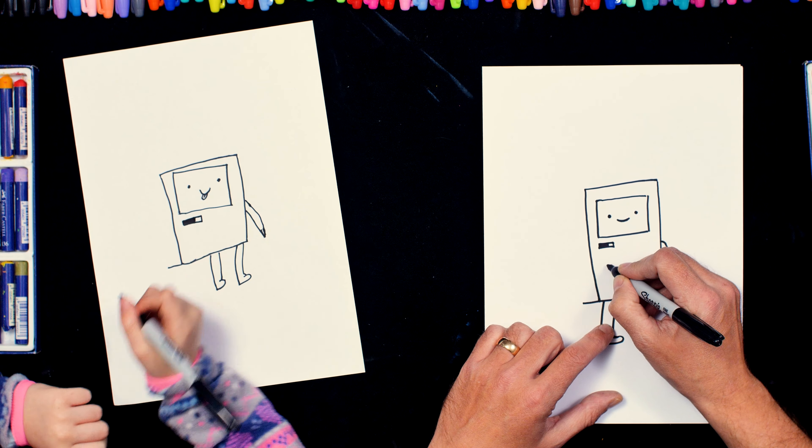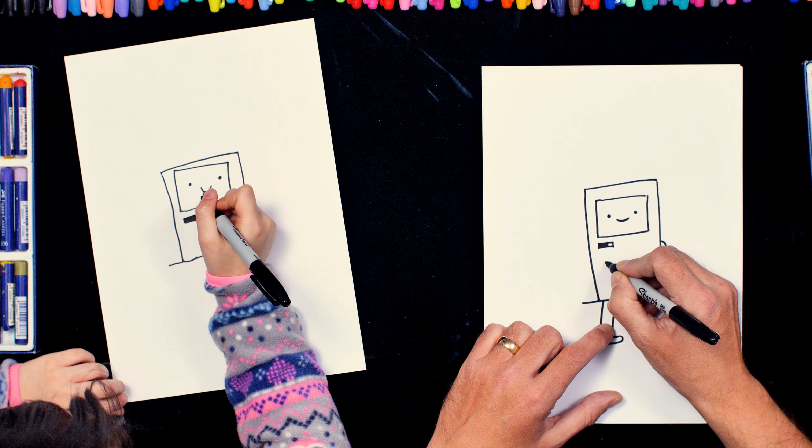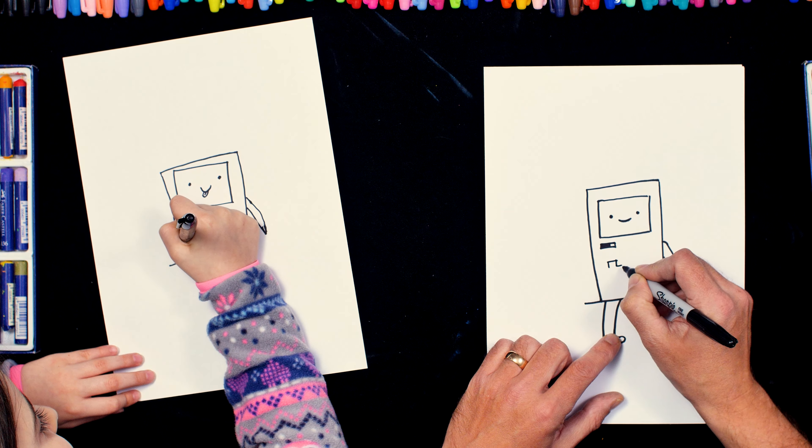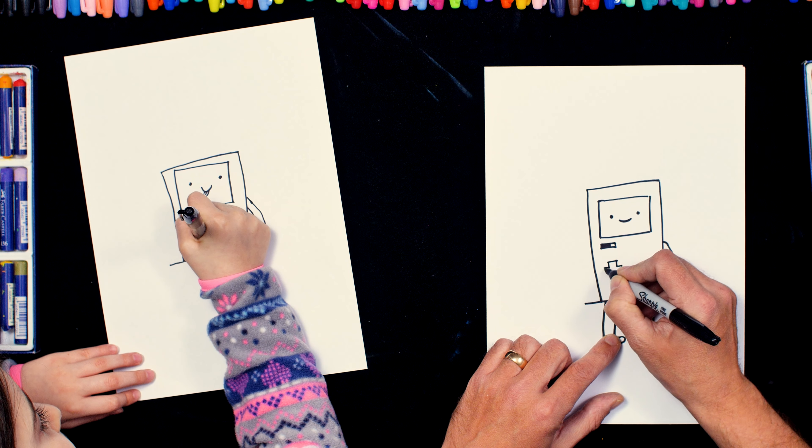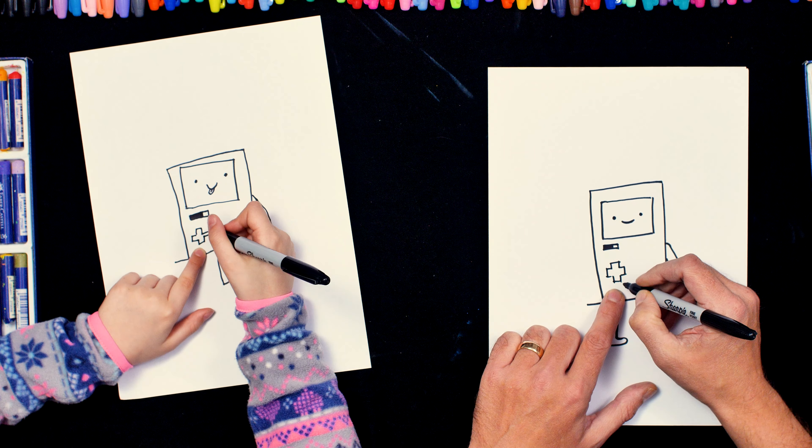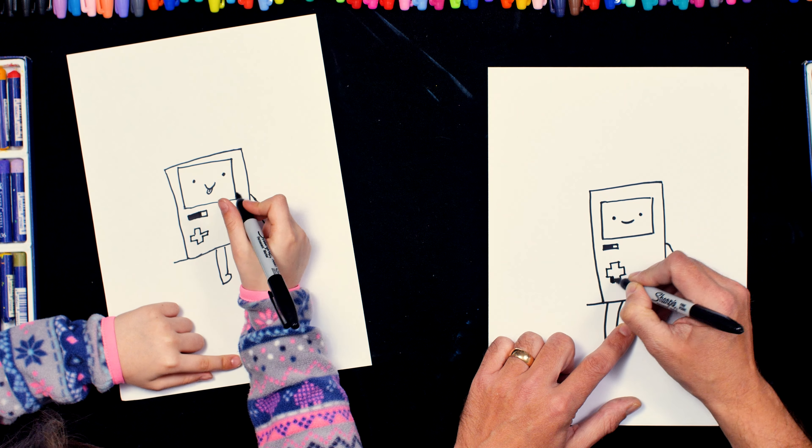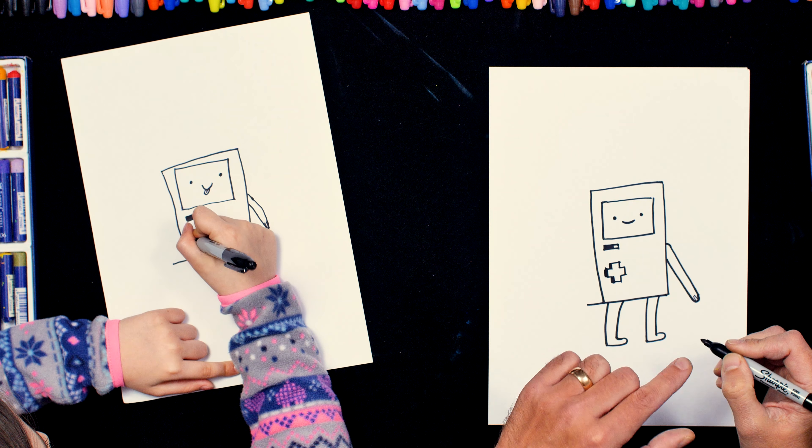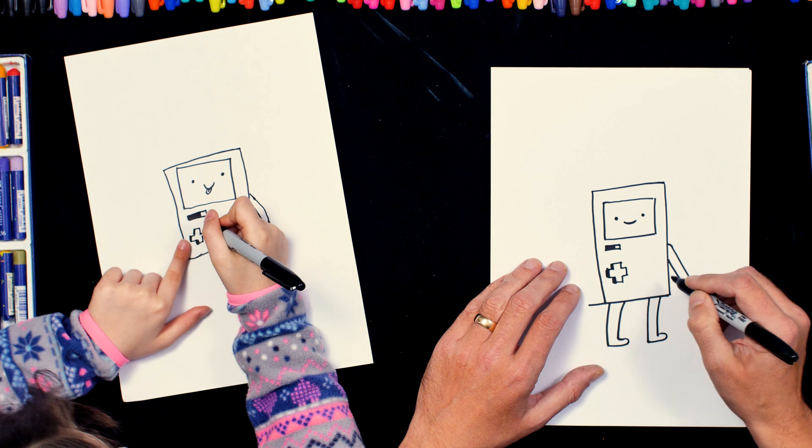And then below that, I'm going to do a cross. So I'm going to do that first. I know how you do it. And then it's like a plus. Yeah, like a plus sign. So that's his little games control. And then on this side, I'm just going to make that a bit darker on that side. Yeah, so it looks like it's popping out from the plastic of his body.